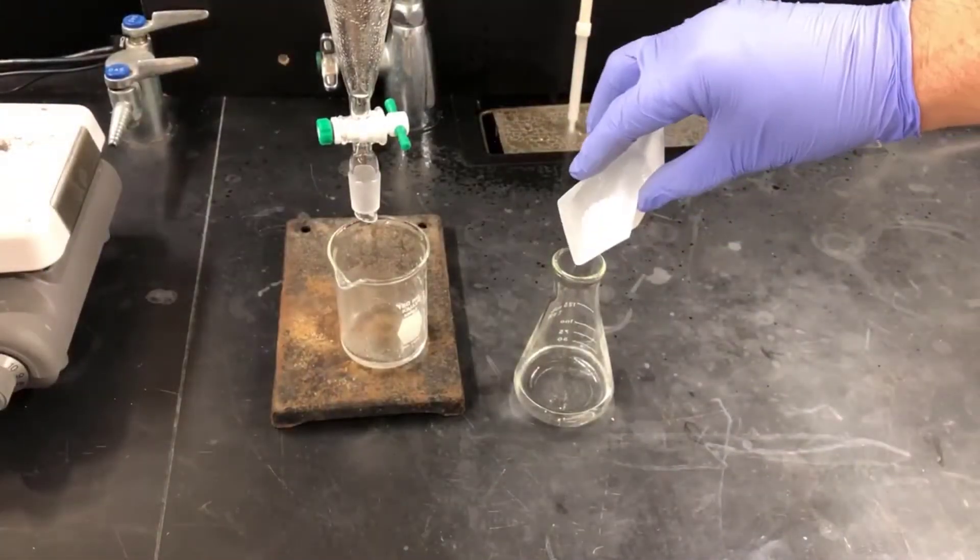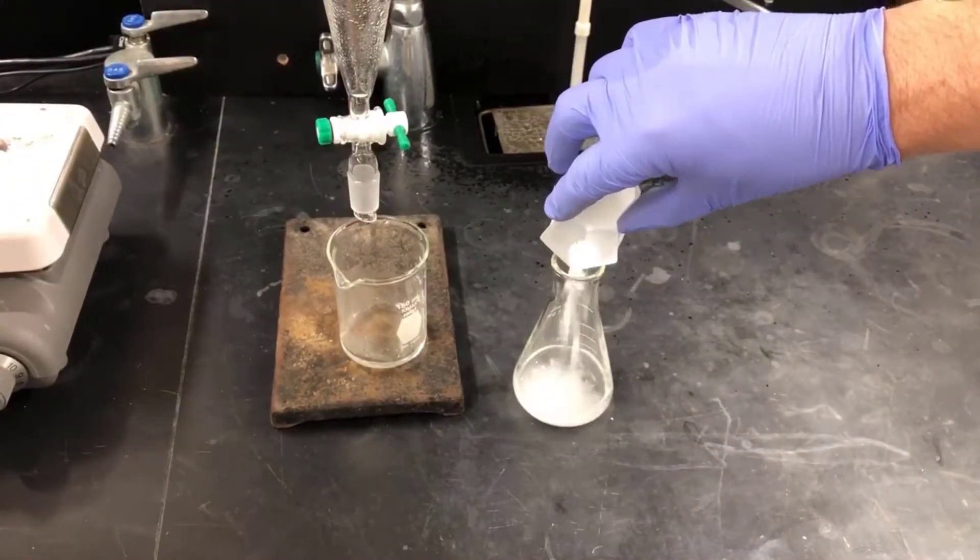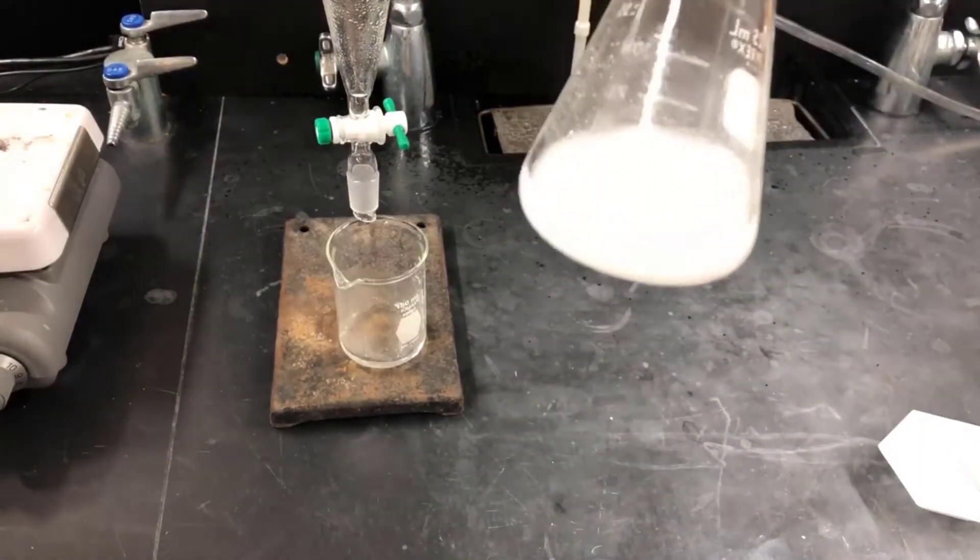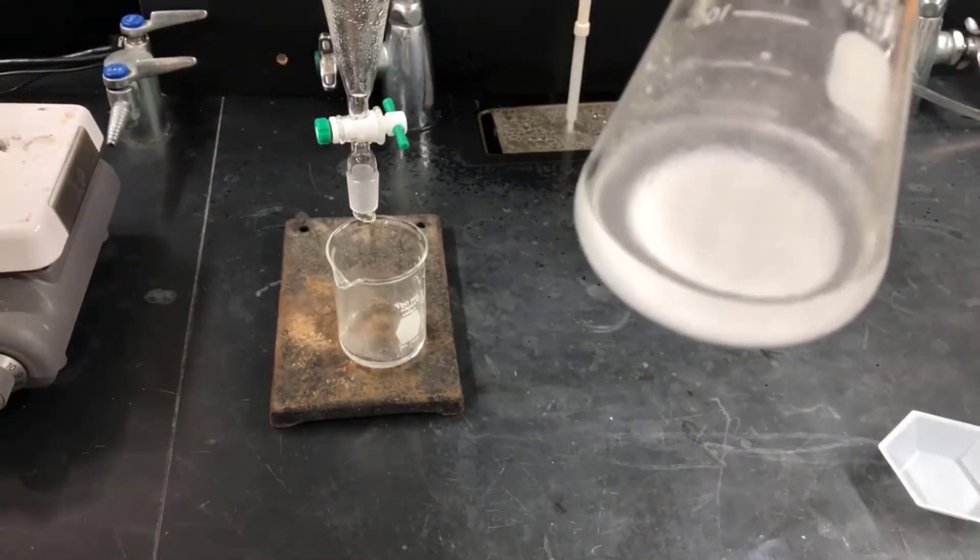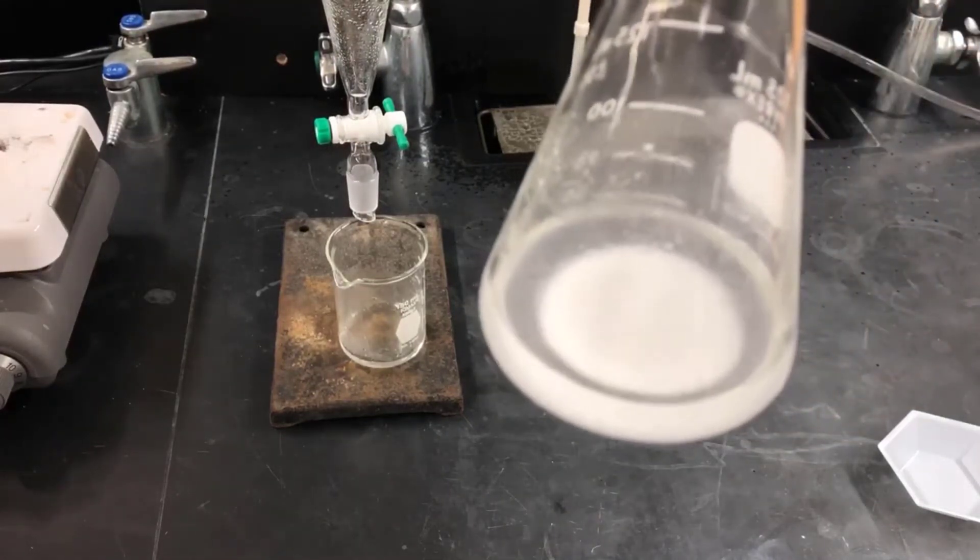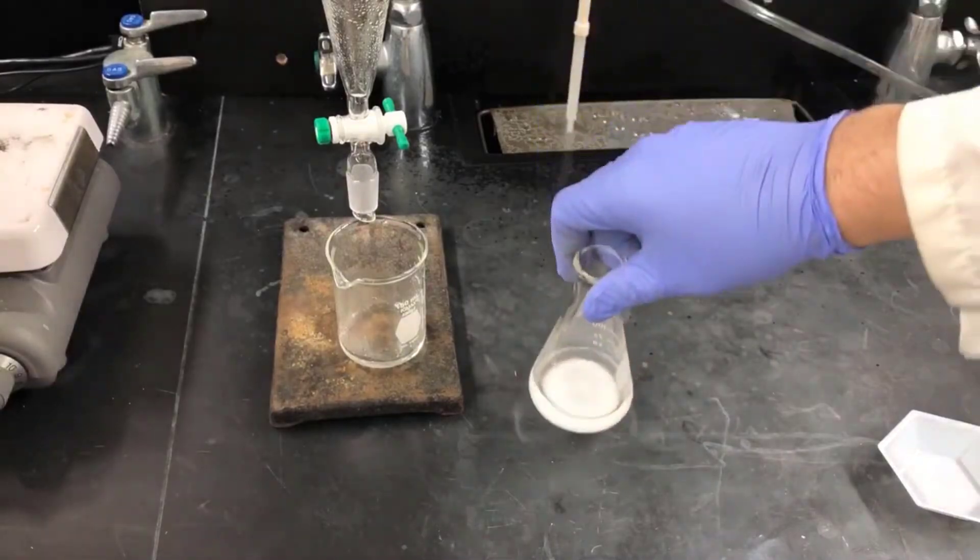Now I'm adding the magnesium sulfate to the ethyl acetate solution with caffeine, and I'm giving it a swirl. You'll know you've added enough magnesium sulfate if some of it remains free-flowing when you swirl it. Magnesium sulfate should get swirled up when you agitate it, but then settle out. If it's all clumpy, you need to add some more magnesium sulfate.